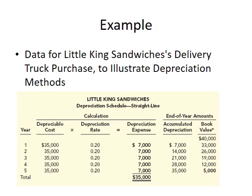Alternatively, with five years the depreciation rate is 1/5, or 20% per year. In year one: debit depreciation expense $7,000 and credit accumulated depreciation $7,000, reducing book value from $40,000 to $33,000. We repeat the same procedure for years two through five, recognizing $7,000 each year. At the end of year five, the book value is successfully reduced from $40,000 to $5,000.